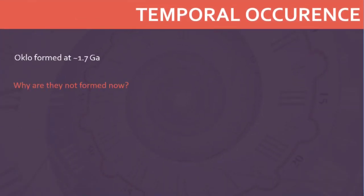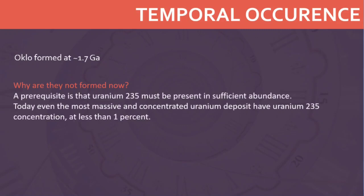The Oklo fossil reactors formed about 1.7 billion years ago. Why are they not formed now? A prerequisite is that uranium-235 must be present in sufficient abundance. Today, even the most massive and concentrated uranium deposits cannot become a nuclear reactor because the uranium-235 concentration is at most less than 1%, which is just too low. However, this isotope is radioactive and decays about six times faster than uranium-238, indicating that the fissile fraction was much higher in the distant past.